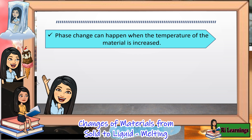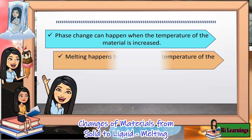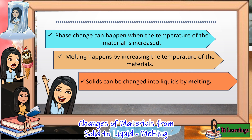Remember, phase change can happen when the temperature of the material is increased. Melting happens by increasing the temperature of the materials. Solids can be changed into liquids by melting.